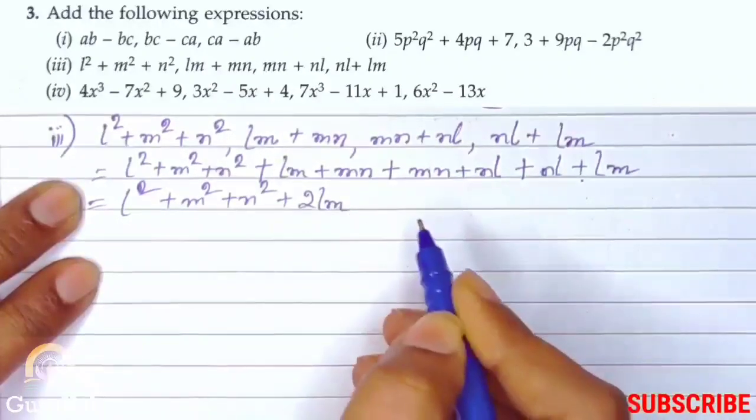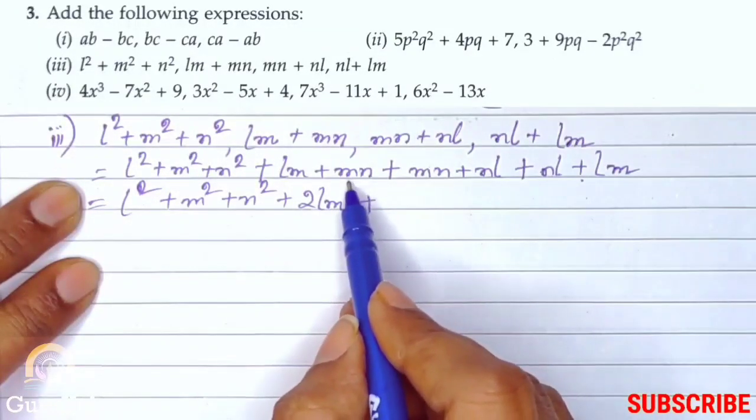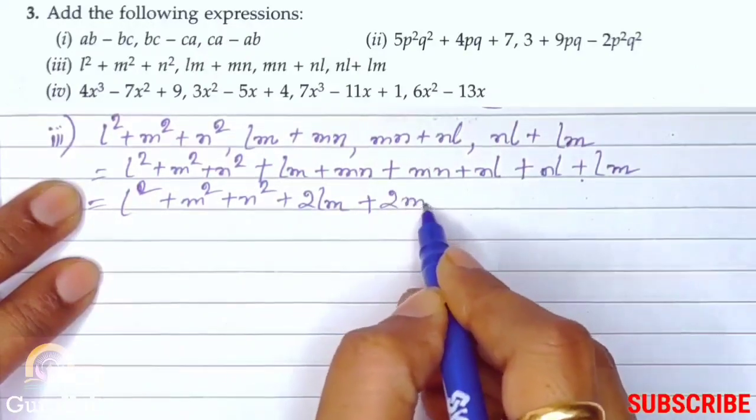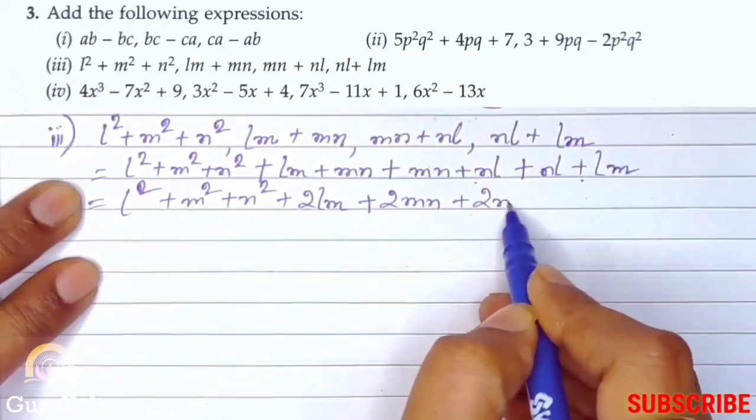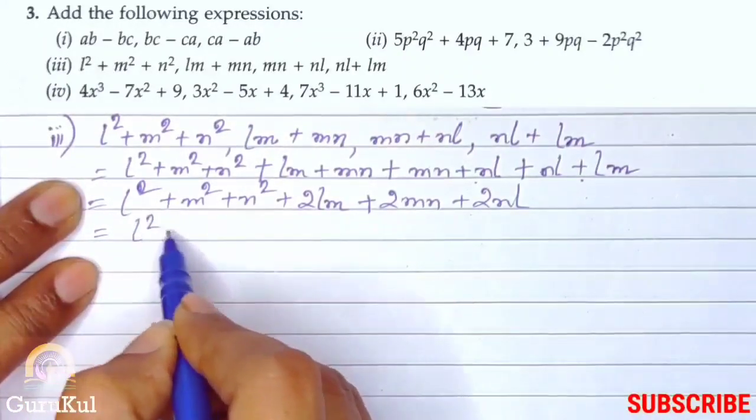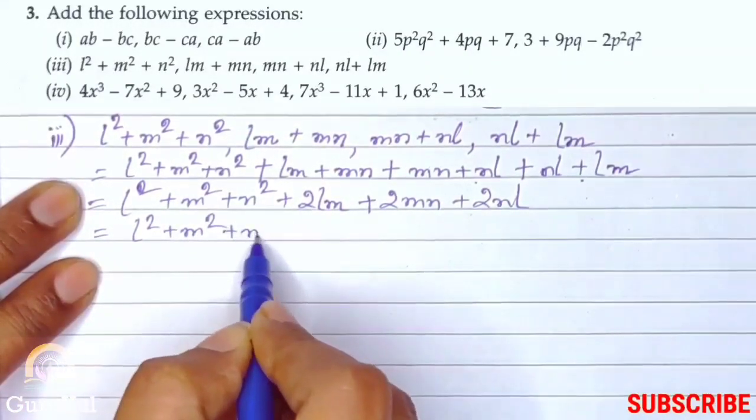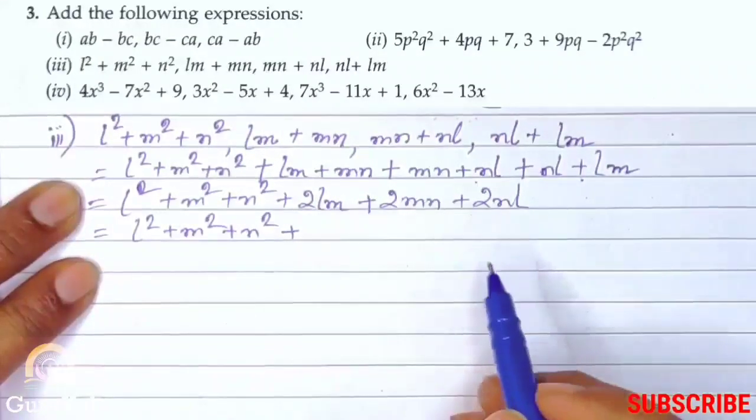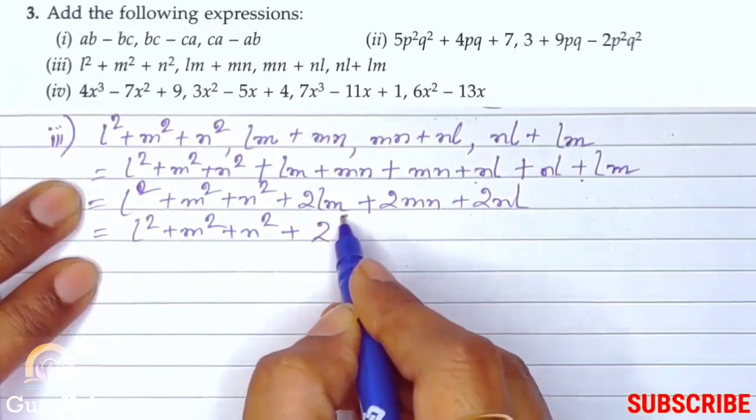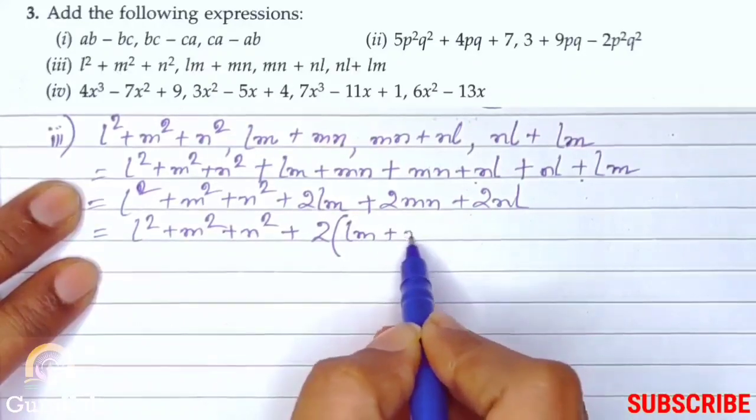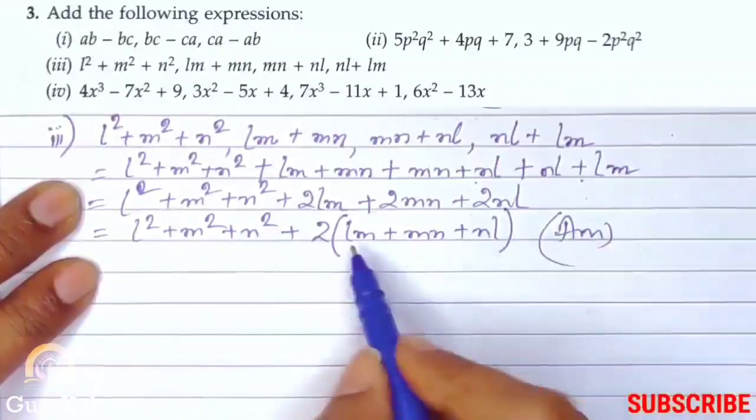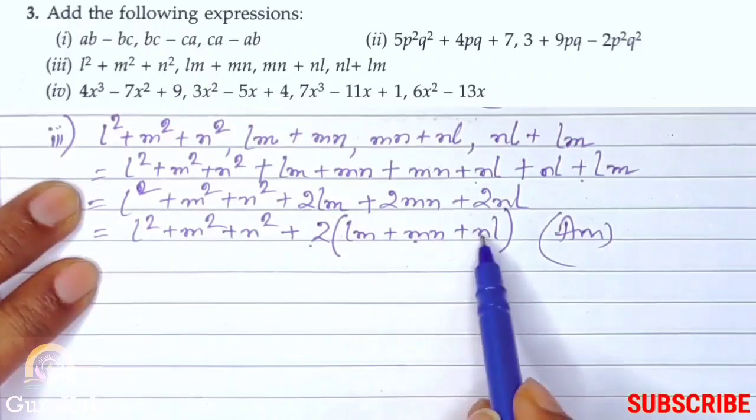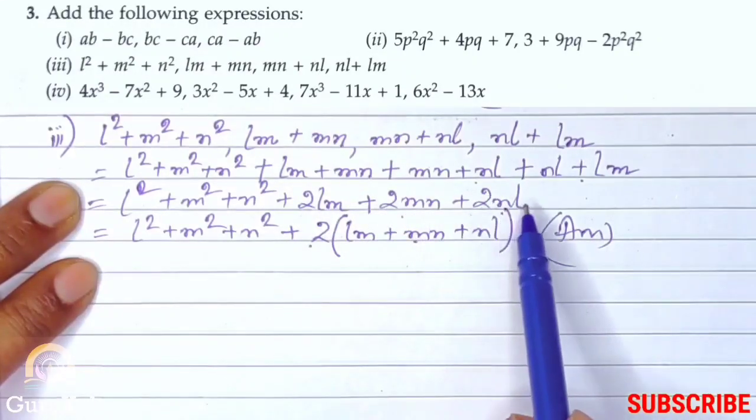Plus. We will talk about MN. MN plus MN. That becomes 2MN. Similarly, NL, NL. Both are plus. So, plus 2NL. Next step. L square plus M square plus N square plus. Now, in these three see two is common. So, we take out two. Then open bracket. What remains? LM plus MN plus NL bracket closed. And this is the answer. When we open the bracket, this two will multiply with individual numbers. Now, what will be the final answer? 2LM plus 2MN plus 2NL.